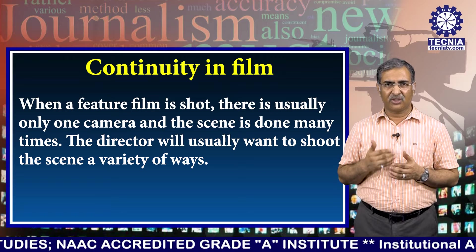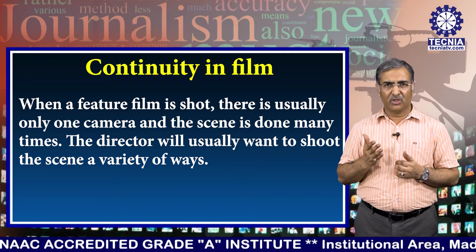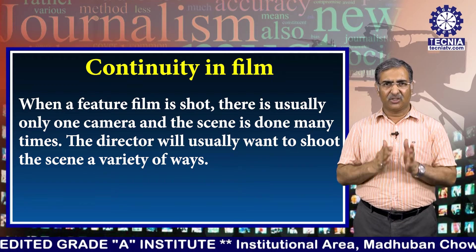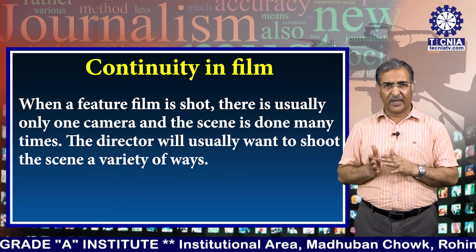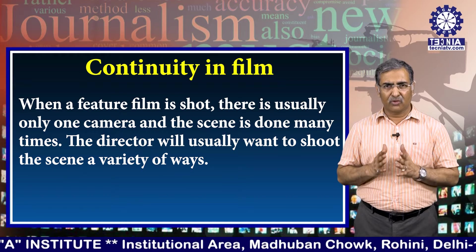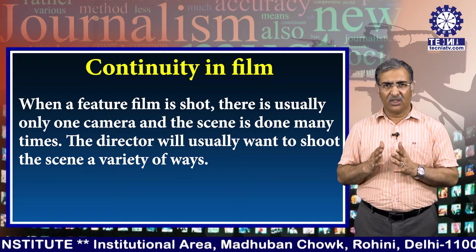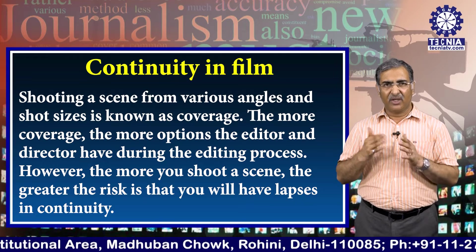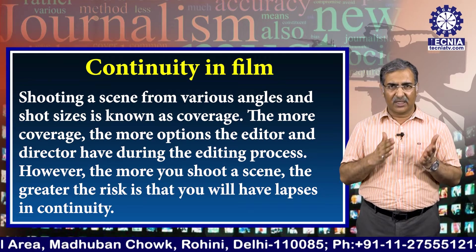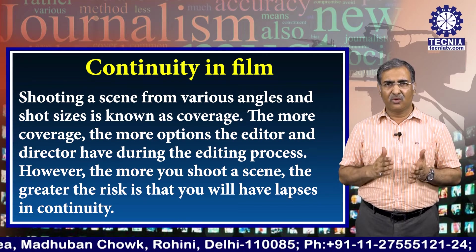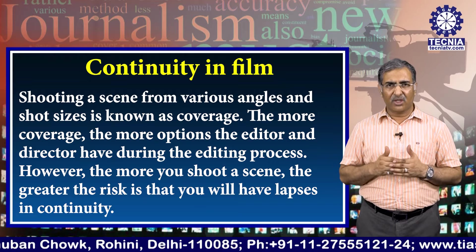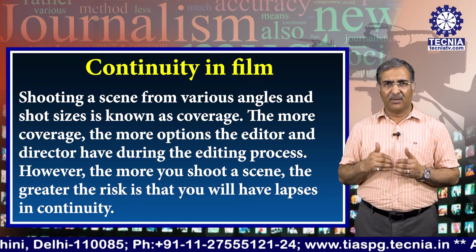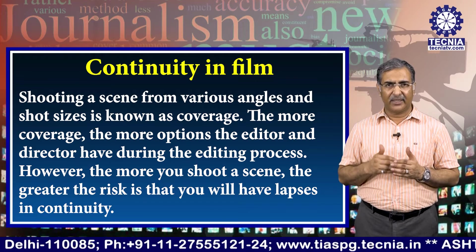When a feature film is shot, there is usually only one camera and the scene is done many times. The director will usually want to shoot the scene a variety of ways. Shooting a scene from various angles and shot sizes is known as coverage. The more coverage, the more options the editor and director have during the editing process.